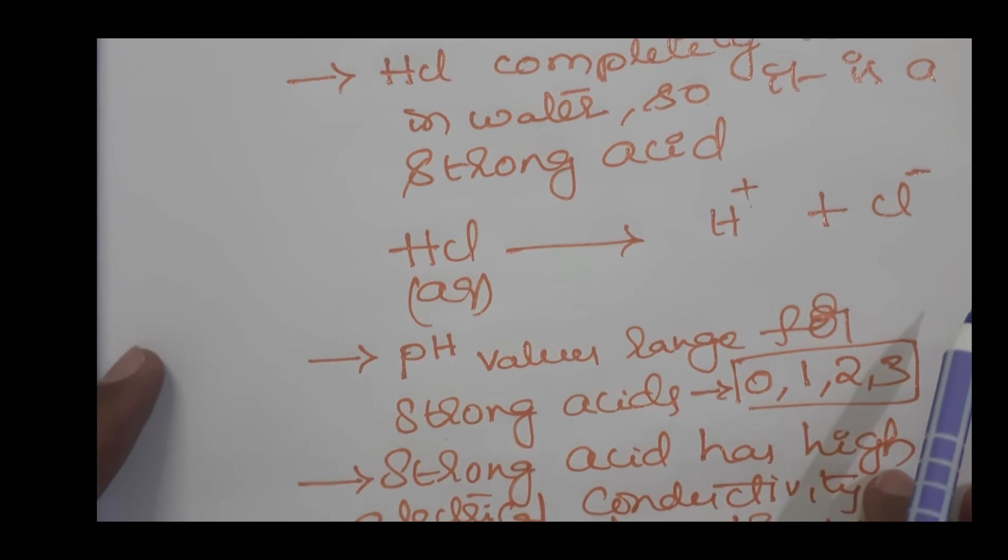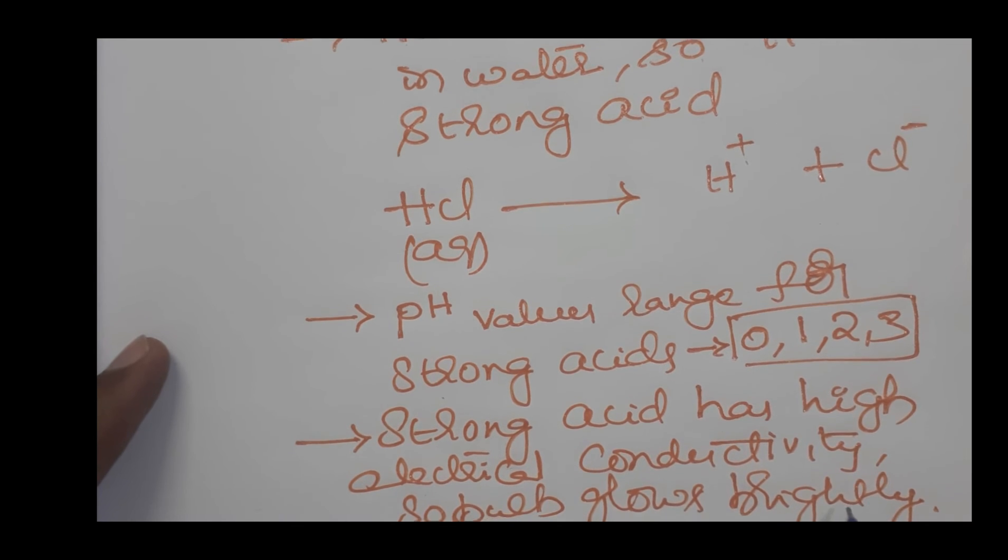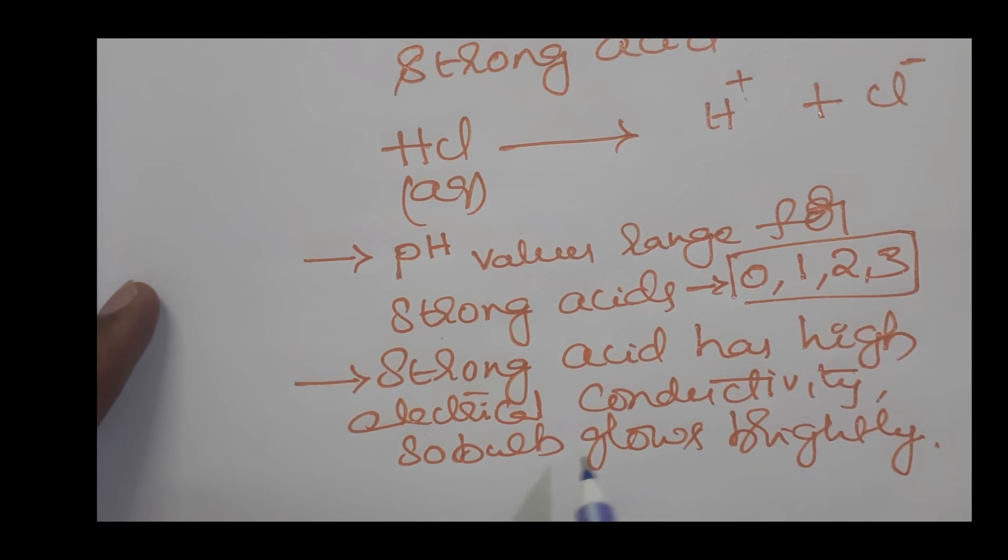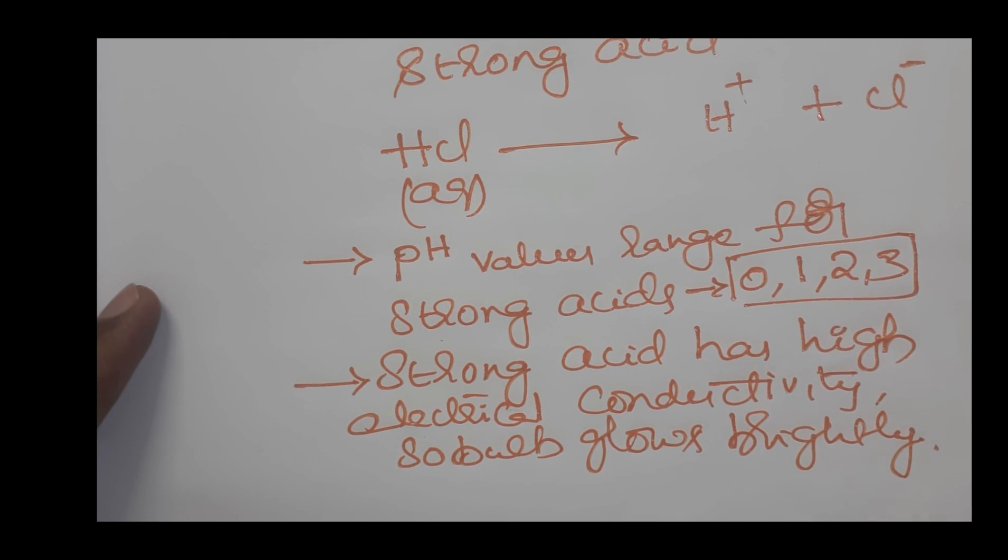Current effectively passes through strong acids, which is why strong acids have high electrical conductivity. When you connect a bulb through a strong acid and complete the circuit, the bulb glows brightly because strong acids have high electrical conductivity. This concludes the topic of strong acids.